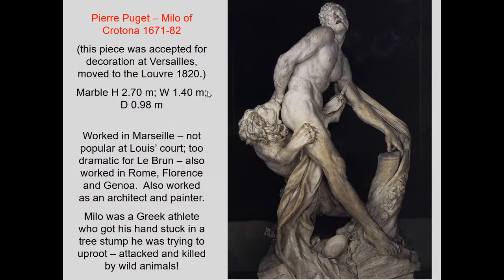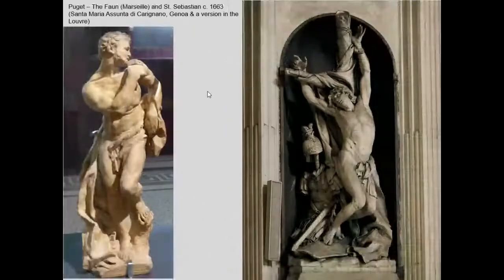Pierre Puget is another sculptor to know from this period. His Milo of Crotona is a particularly disturbing piece. Milo was a Greek athlete who got his hand stuck in a stump and couldn't free it; while trapped, he was attacked by a lion, which you see tearing into the muscle of his thigh. There is much more movement and dynamism than you would have seen in the Renaissance, and certainly not a subject you would have seen in ancient Greece — but that is the hallmark of the Baroque. Puget was a bit over the top even for Louis XIV's taste, so he was not the king's favorite sculptor, though a few of his pieces from Versailles were eventually moved to the Louvre.